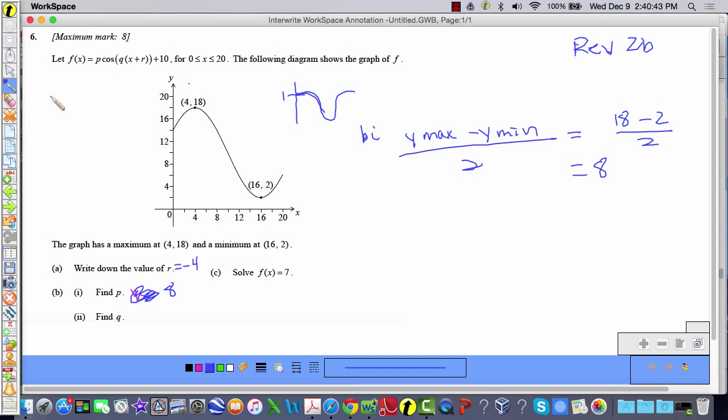Now, q, the general form of a trigonometric function is a cosine b times x minus c plus d. And this affects the period of the function. So, if you remember, the period is equal to 2 pi over b, whatever that coefficient is. In this case, we're calling it q. So, in order to find q, we're going to have to find the period.